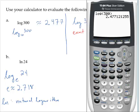Our calculator also has a natural log button, and it says L-N. So over here, again on the left hand side, L-N of 24, natural log of 24, is approximately 3.178.